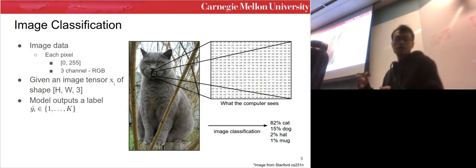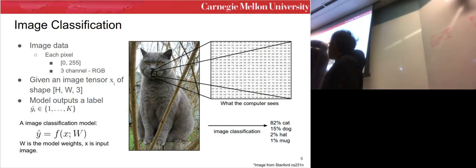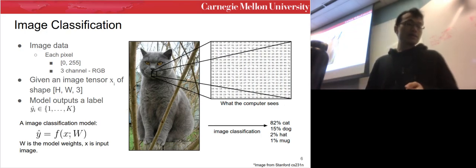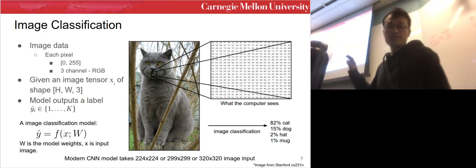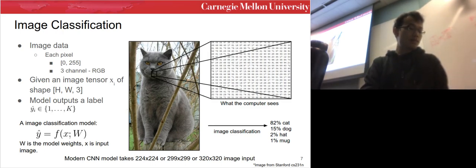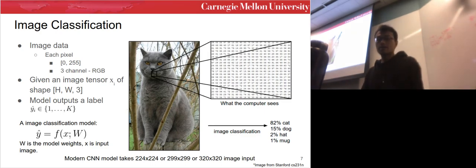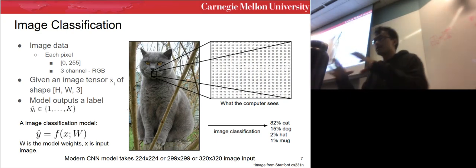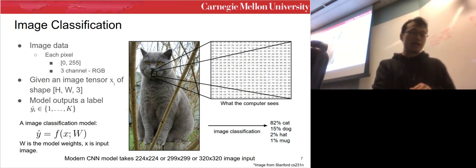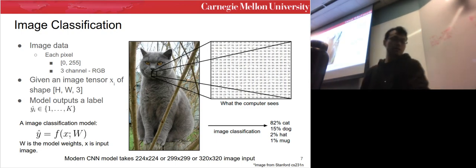For image classification, given an image, you want the model to output a label — it's a multi-class classification problem. We represent the image classification model as Y = F(X, W), where W is the model weights and X is the input image. Modern CNN models take an image as input; since images are high resolution, the CNN crops them, resizes them, and takes the center crop for classification.